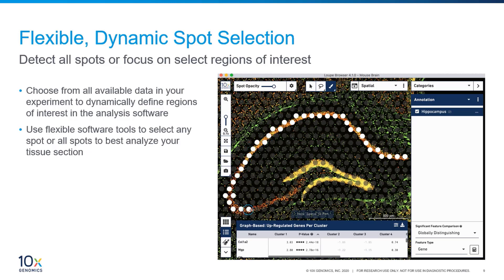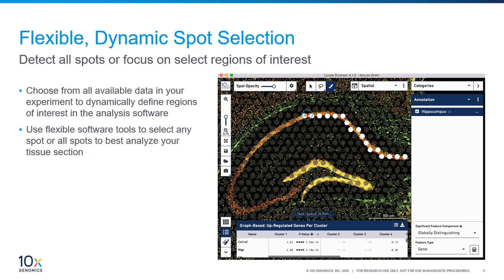If you wish, you could also analyze the different parts of the hippocampus — for example, comparing the CA1 to CA4 hippocampal areas, or contrasting its gene expression to that of the dentate gyrus, shown here in yellow.